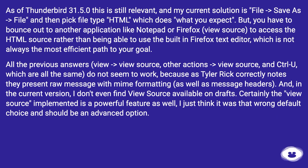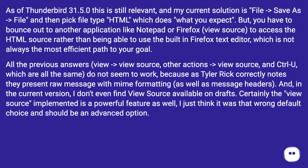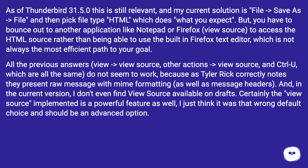This is not always the most efficient path to your goal. All the previous answers — View > View Source, Other Actions > View Source, and Ctrl+U — which are all the same, do not seem to work, because as Tyler Rick correctly notes they present the raw message with MIME formatting as well as message headers. In the current version, I don't even find View Source available on drafts. The view source feature is powerful, but I think it was the wrong default choice and should be an advanced option.